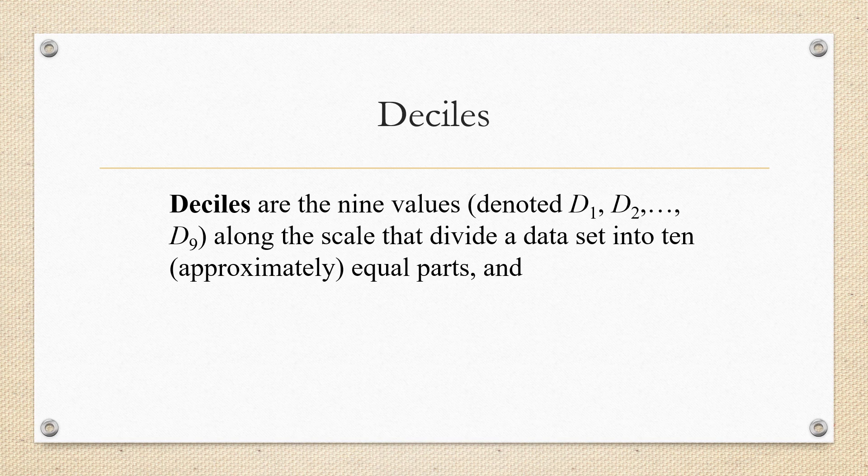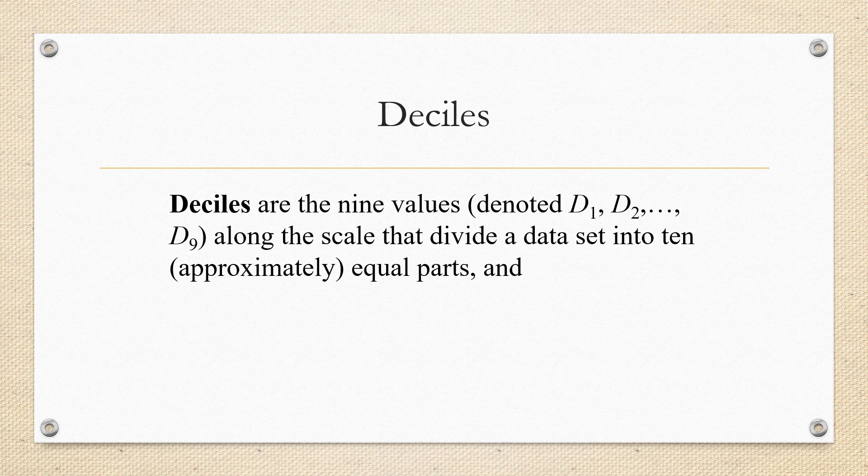Let's start with deciles. Deciles are the nine values denoted D1, D2, and all the way up to D9 along the scale that divides a data set into 10 approximately equal parts.